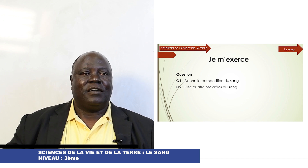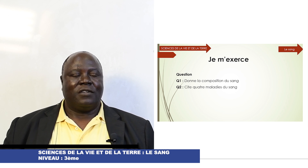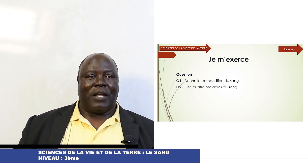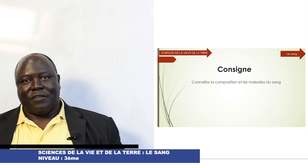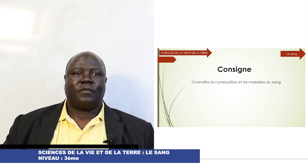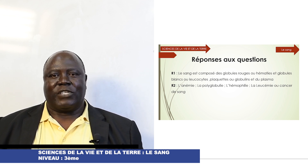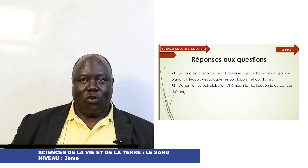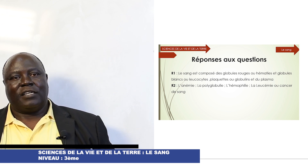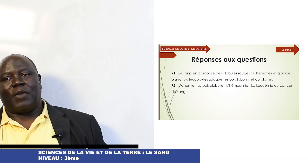On s'exerce. Question 1 : donne la composition du sang. Question 2 : cite quatre maladies du sang. Consigne : connaître la composition et les maladies du sang. Réponse : le sang est composé des globules rouges ou hématies, des globules blancs ou leucocytes, des plaquettes sanguines et du plasma.